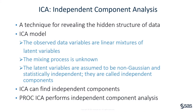Independent component analysis, or ICA, is a statistical technique for revealing the hidden factors of data. The ICA model assumes that the observed data variables are linear mixtures of some unknown latent variables, and the mixing process is unknown. The latent variables are assumed to be non-Gaussian and statistically independent. These latent variables are called the independent components of the observed data.